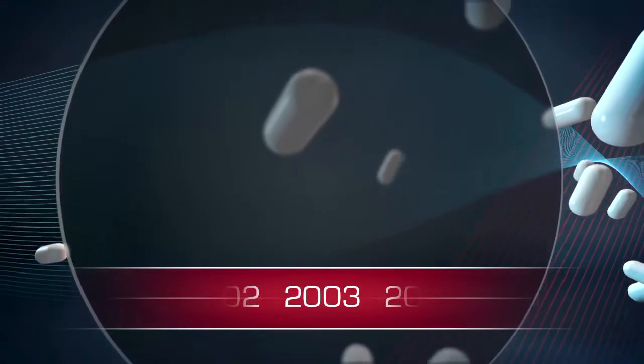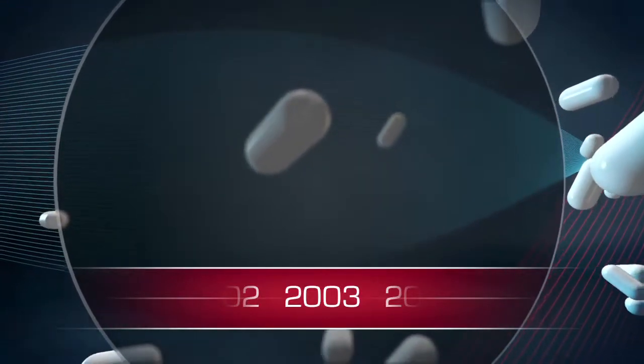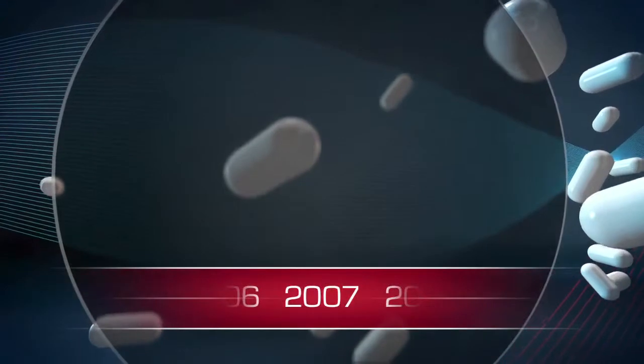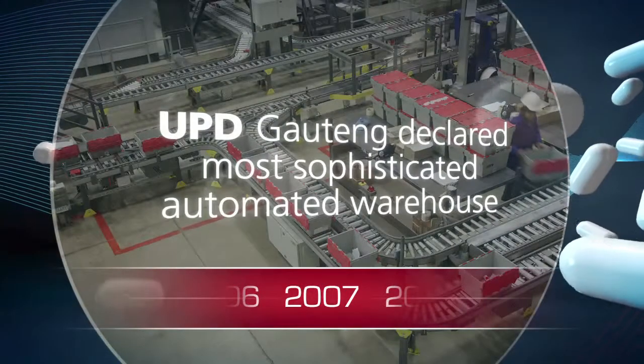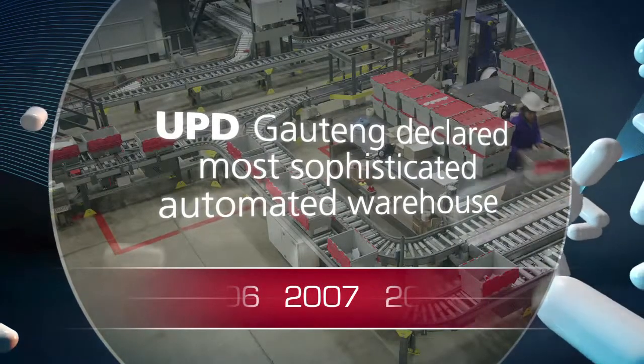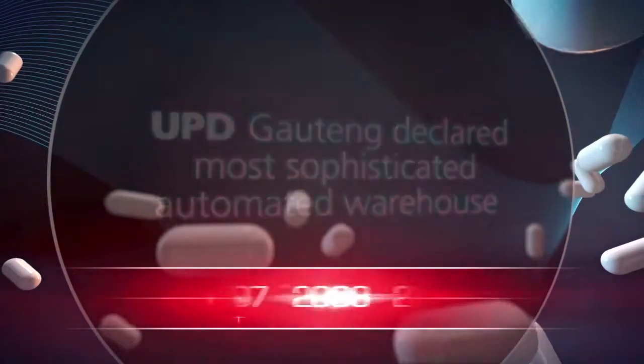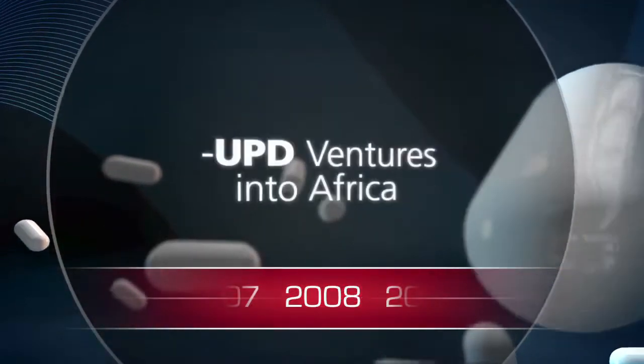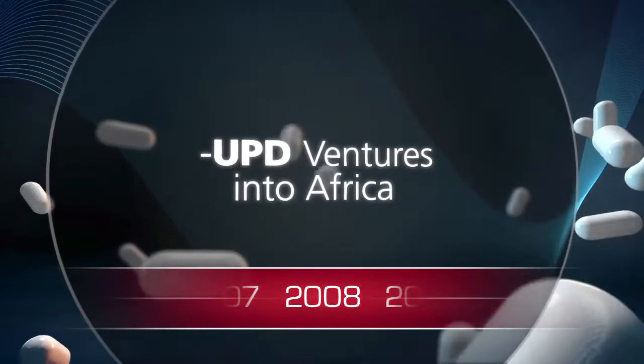As times change, so do the ways in which we do things. In 2007, UPD is declared the most sophisticated automated warehouse. 2008 sees UPD venturing out into Africa.